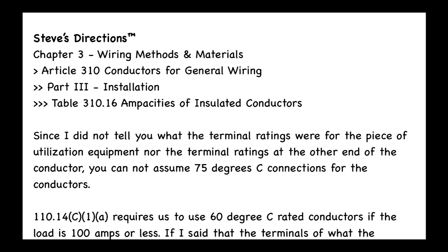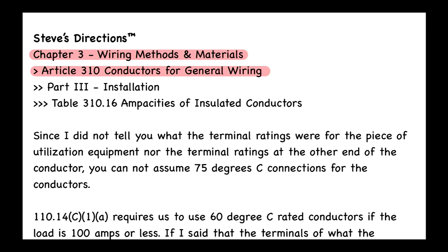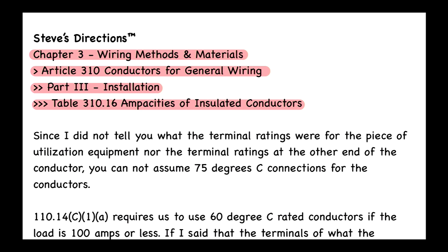The article we're dealing with here is Article 310 — Conductors for General Wiring — within Chapter 3, Wiring Methods and Materials. We'll look at Part 3 of Article 310 and specifically Table 310.16, Ampacities of Insulated Conductors. In the 2017 code book, that table was numbered 310.15(B)(16).